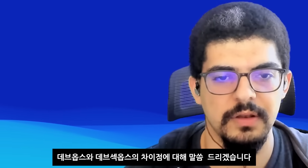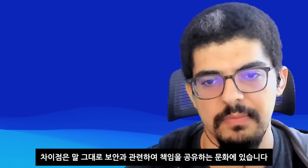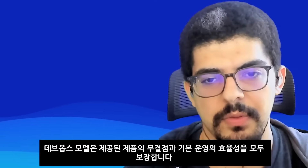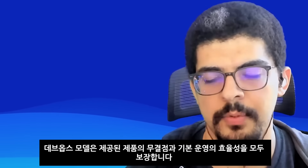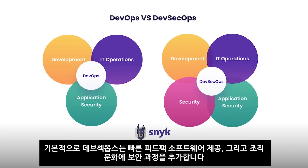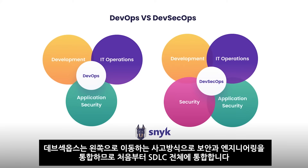Now let's dive into the difference between DevOps and DevSecOps. The difference is basically the culture of shared responsibility in regards to security. The DevOps model ensured both the integrity of the delivered product and the effectiveness of the underlying operations. DevSecOps differs in that it expands DevOps and includes security objectives inside. DevSecOps infuses security practices into fast-feedback software delivery and organizational culture. Unlike traditional DevOps models where security objectives are inserted at the end of the software cycle, DevSecOps integrates security and engineering with a shift left mindset throughout the SDLC starting at the beginning.